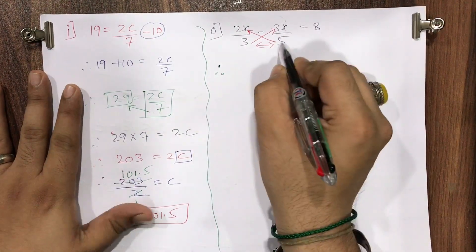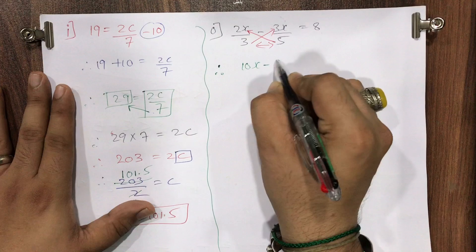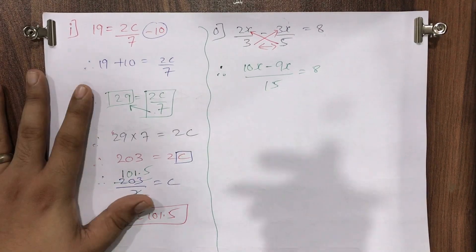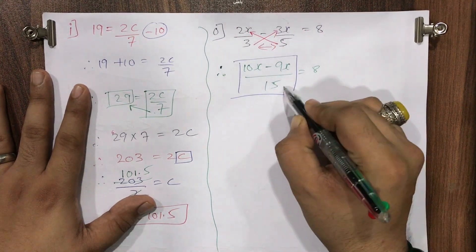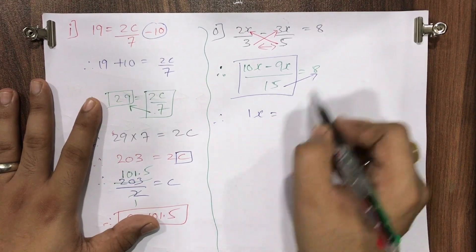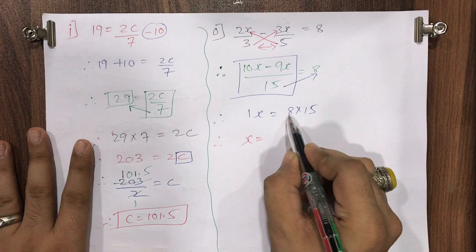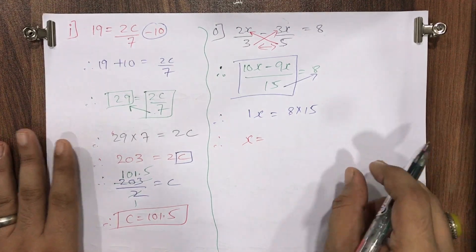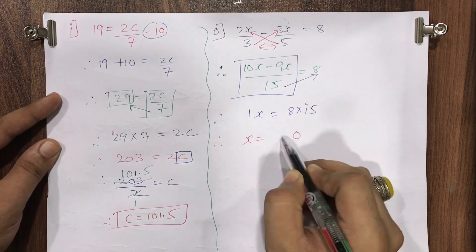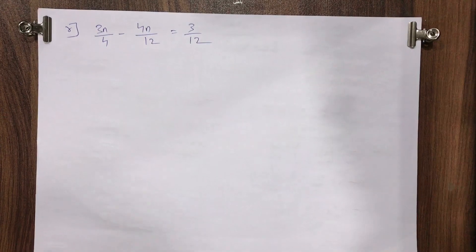So therefore: (5×2x − 3×3x) / 15 = 8, which gives (10x − 9x) / 15 = 8. Now the entire left side is one term, so 15 can be multiplied with 8. Therefore 1x = 8 × 15 = 120. The value of x is 120.